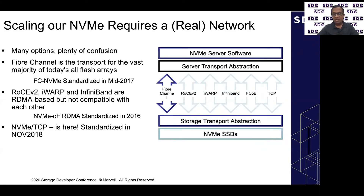If you really want to scale NVMe all across the data center, you need a real fabric and a real network. There are plenty of different fabrics in the market. From a standards perspective, the first standard was NVMe over RDMA with RoCE v2, its TCP variant iWARP, or InfiniBand — standardized way back in 2016. There was a lot of traction initially, especially with NVMe over RoCE v2. Then came fiber channel. There's a lot of investment in data centers by customers in fiber channel SANs, and fiber channel continues to move forward with the new FC NVMe standard, with products already supporting FC NVMe in both HBAs and storage arrays.